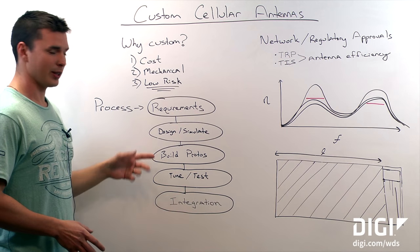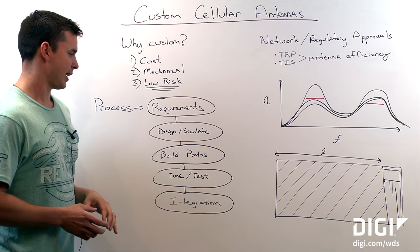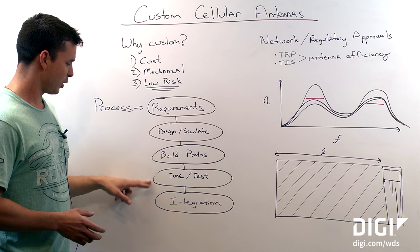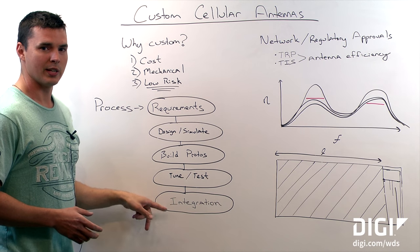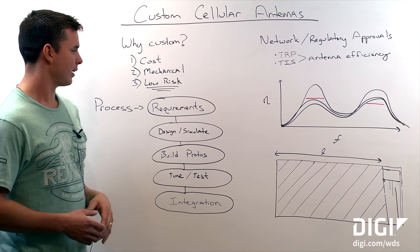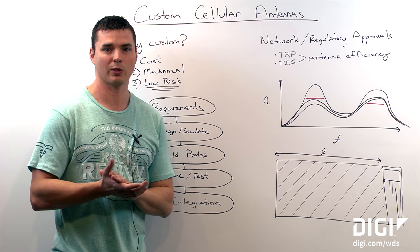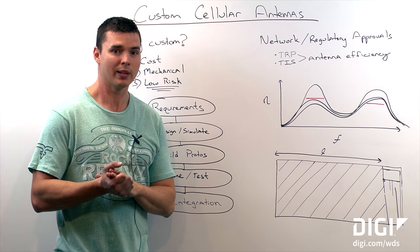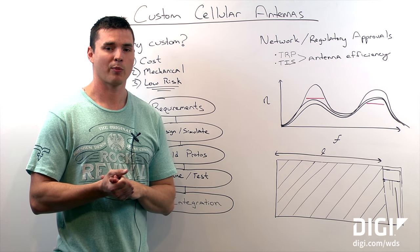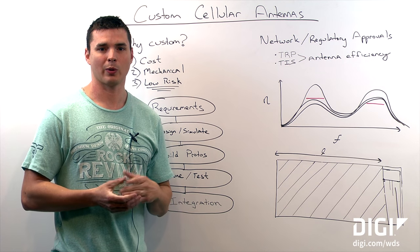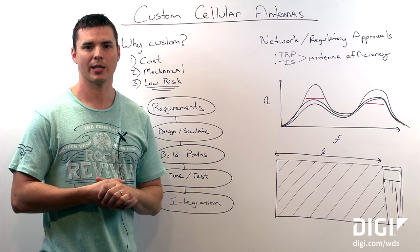This is the big difference compared to just implementing an off-the-shelf antenna — you're going to know all of this before you even do an integration, and that's going to give you a lot of confidence. I hope this showed why a custom cellular antenna is the lowest risk path for a cellular application. For more information, go to our website at www.digi.com/WDS.